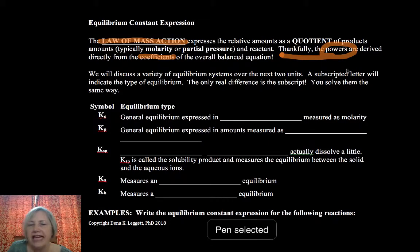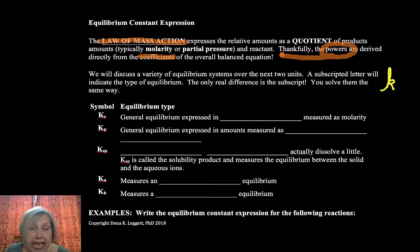The symbol that is used is a capital K. Remembering kinetics, or if you've covered kinetics, you may not have, but if you've covered kinetics, we use a lowercase k for the rate constant. Now we're using an uppercase K for an equilibrium constant. Now this K, this uppercase K, may have some sort of subscript associated with it. And all that subscript does is give us a clue as to what type of system that we are working with. The mathematics, the ideas, the concepts are very, very similar, and they will be solved the same way.